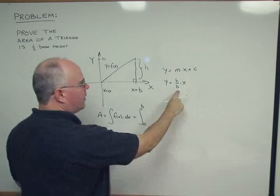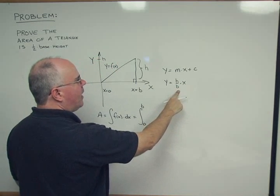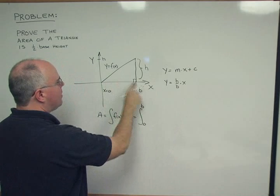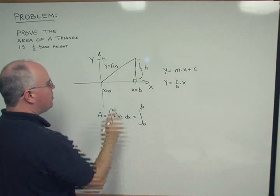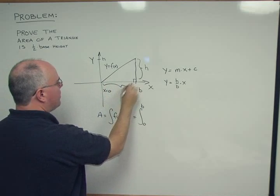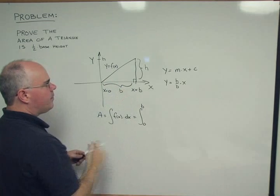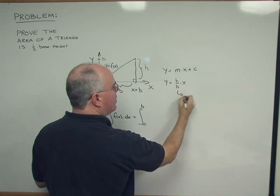And how did I get that? Well this is the slope of the line and the slope is just the rise which is h over the run which is b, the base of this triangle b. So this is equal to my slope.